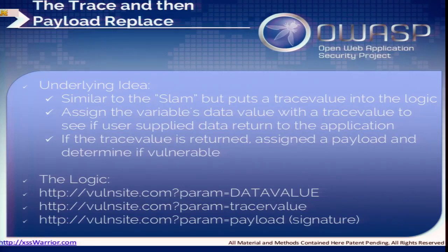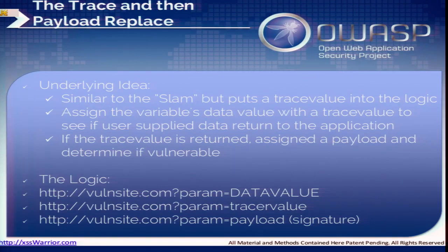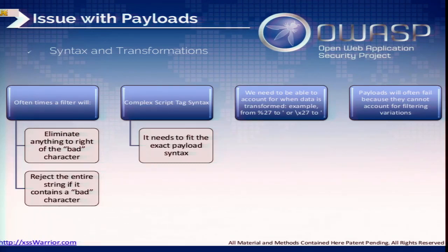This last one is more historical, just for completeness. It finds a parameter with a data value, puts in a tracing value like 1-2-3-4-5, then submits the payload with no tracing value in it. The issue is string transformation: you submit a string, the application does something with it, breaks it in some way, and the automated scanner can't figure out what to do with it and basically fails.